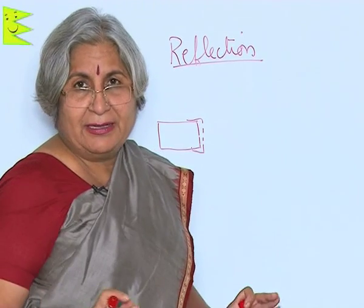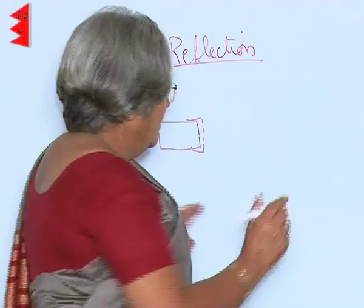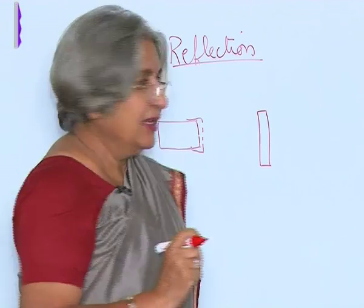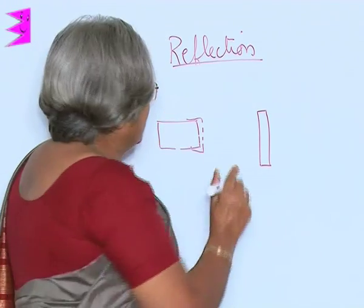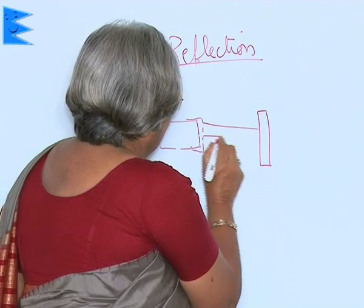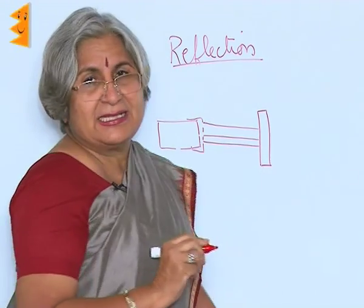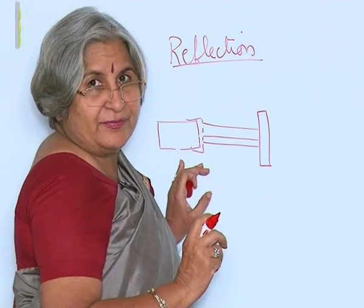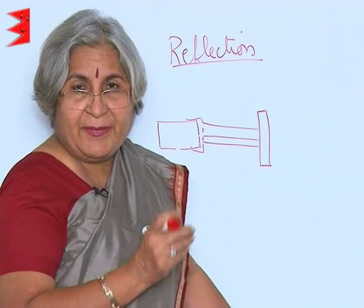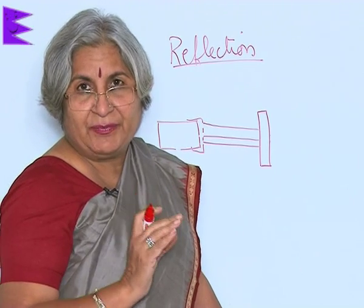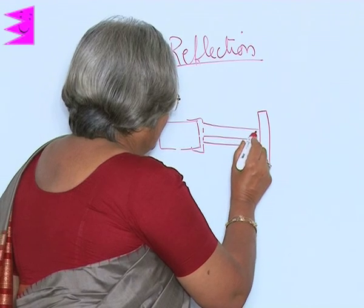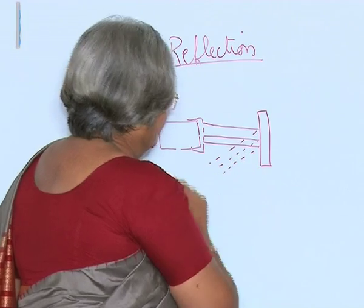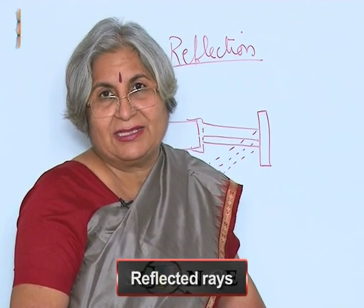Now take a white paper, spread it on a table, and put a mirror vertically on it — you can fix it on a stand. Adjust the torch so that light from the three slits falls on the mirror. You can adjust the distance between the mirror and the torch so that the light spreads onto the mirror. What you will see is that all three rays come back to you — these are the reflected rays, and this is reflection.